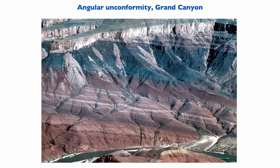In the Grand Canyon, we can see a beautiful angular unconformity between the sediments at the bottom, which show a very clear angular relationship with the sediments at the top. This represents the Precambrian to Paleozoic succession and indicates clearly that there were tectonic events on the North American craton at the end of the Precambrian.